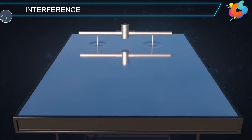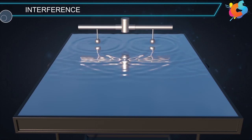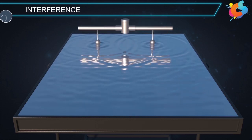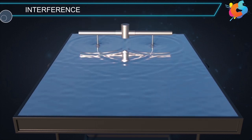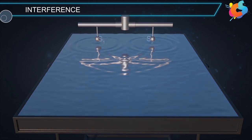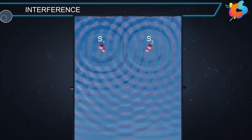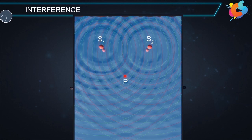Now consider a situation where there are two ball needles separated by a small distance and the balls move periodically up and down in an identical fashion on the surface of water. These two sources produce a system of circularly propagating waves which superpose on each other during their travel. Let us mark all crests by red color and all troughs by green color. Consider a point P on the surface such that it is at equal distances from the sources S1 and S2.